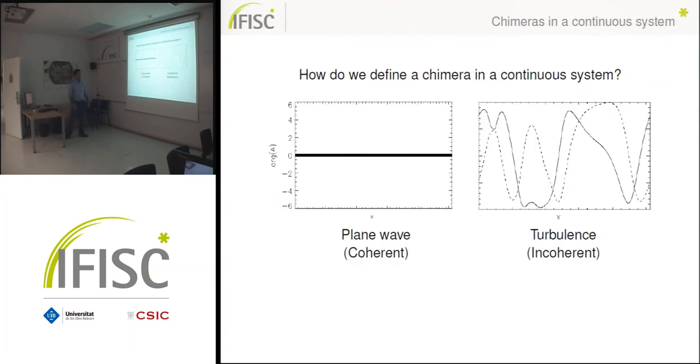And the second one is to find chimera states properly integrated in this system. So first, we have to define how do we intend to find a chimera in a continuous system. So for that we define the coherent regime as a plane wave in which the oscillators go in phase, and the incoherent as turbulence in which everything is chaotic.